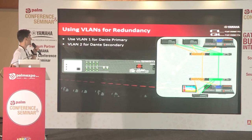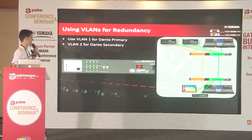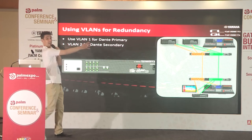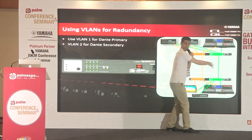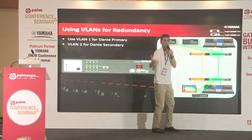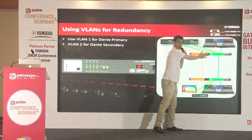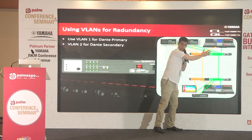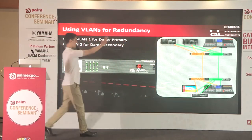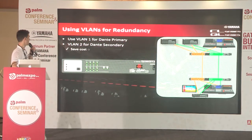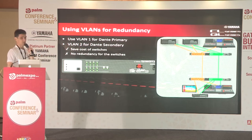You can also use VLANs for redundancy — VLAN 1 for Dante primary and VLAN 2 for Dante secondary. This makes a lower cost redundant network with safety for all cables. However, if a switch loses power you lose everything — but cable cutting is the more common problem, and this protects against that. It saves you the cost of extra switches, but doesn't give you redundancy for the switches themselves.